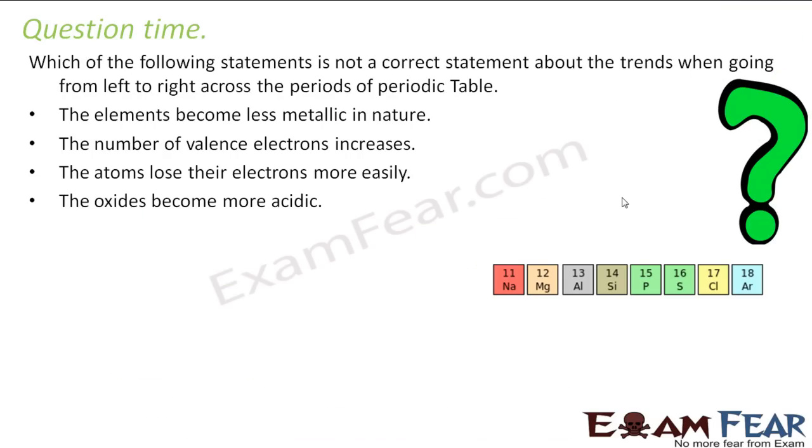Which of the following is not a correct statement about the trend from left to right. The elements become less metallic in nature. That's correct because the metallic character is decreasing. The number of valence electrons increases. That's also correct. This has one, this has two, three, four electrons. The atoms lose their electrons more easily. This is incorrect. Because this is more reactive and this is less reactive. Because it has to lose only one electron. This has to lose two electrons. So this is incorrect. The oxide is also correct. So this is incorrect. This is my answer.